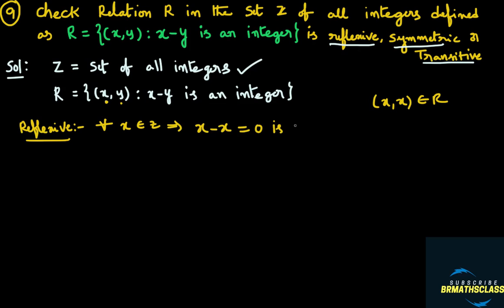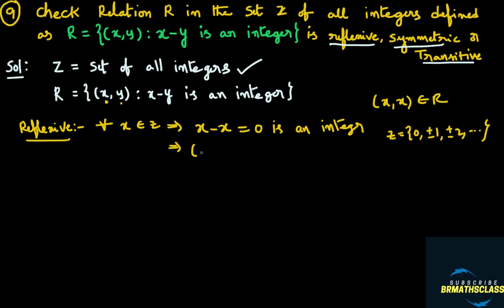X minus x is 0. Is 0 an integer? Yes. The integer set contains 0, plus or minus 1, plus or minus 2, and so on. So 0 is an integer. Therefore x minus x is an integer. If x minus x is an integer, the ordered pair (x, x) will be there in the relation. For any x belonging to Z, ordered pair (x, x) belongs to R, so the relation R is reflexive.